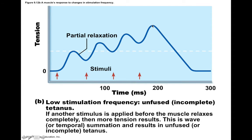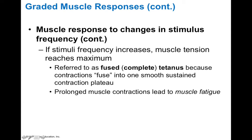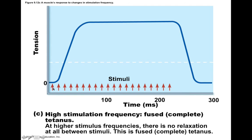Muscle responses can also result from an increase in stimulus frequency. If stimulus frequency increases enough, muscle tension reaches a maximum called fused or complete tetanus, where contractions fuse into one smooth sustained contraction plateau. This plateau is determined by the number of sarcomeres in the muscle — eventually all sarcomeres are fully contracted, producing the maximal tension possible. In the diagram, rapid stimuli cause a rapid increase in tension up to this plateau, which is maintained until the last stimulus allows relaxation.